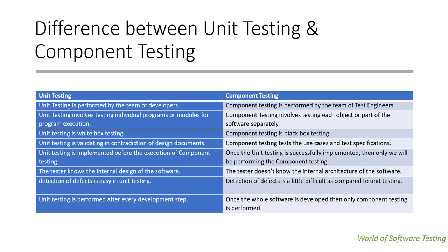Unit testing is a validation in contradiction of the design document, whereas component testing tests the use cases and test specifications — whatever the specifications specified by the client, against which we need to perform component testing.